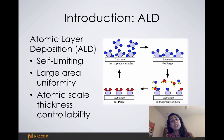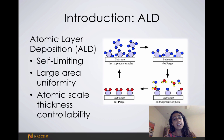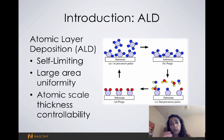ALD, or atomic layer deposition, is exactly what the name implies — it's a method of depositing materials one atomic layer at a time. ALD is advantageous because it's self-limiting, meaning that it only reacts with the surface once, such that we can get very thin films.